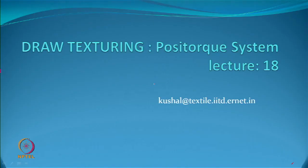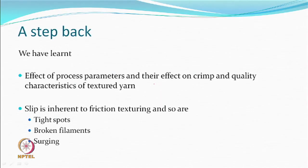We are continuing with the friction texturing. Some development took place which became quite an important development in this, which is called the POSITOC system. We will take some time to just learn about this. Just before, what we have seen is the effect of process parameters and their effect on crimp characteristics and the quality characteristics.